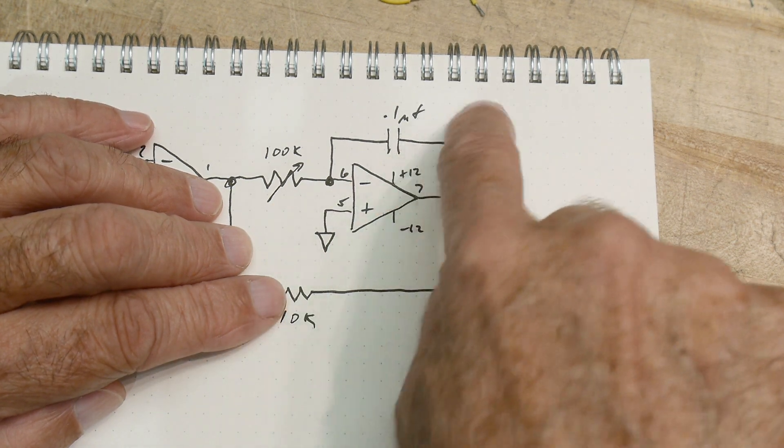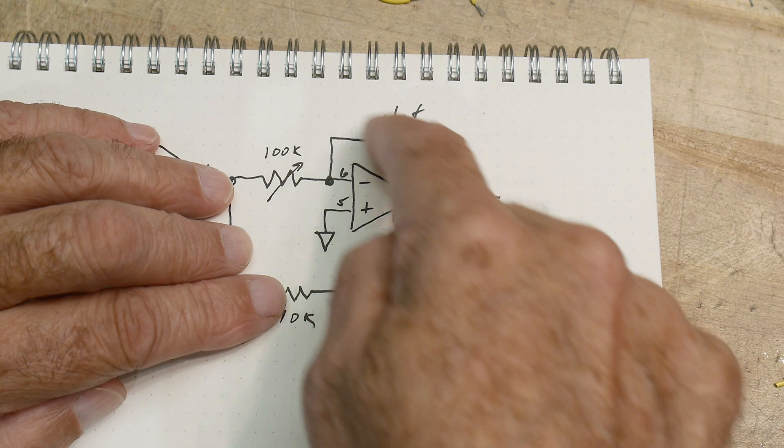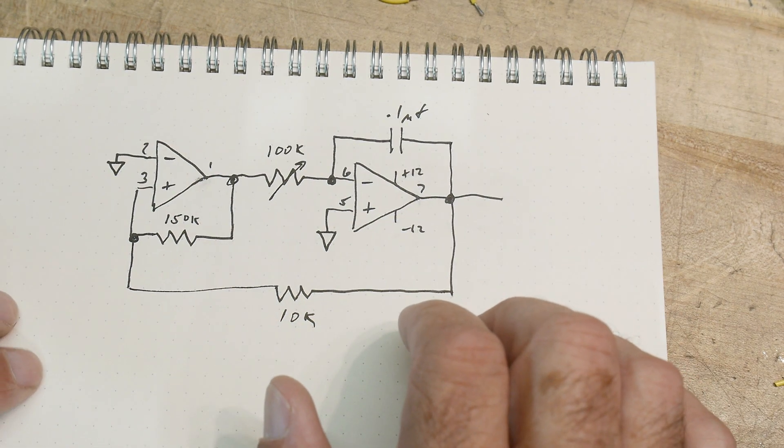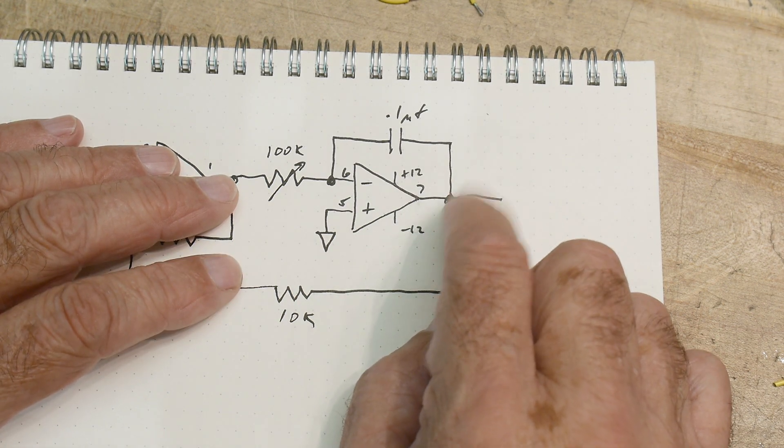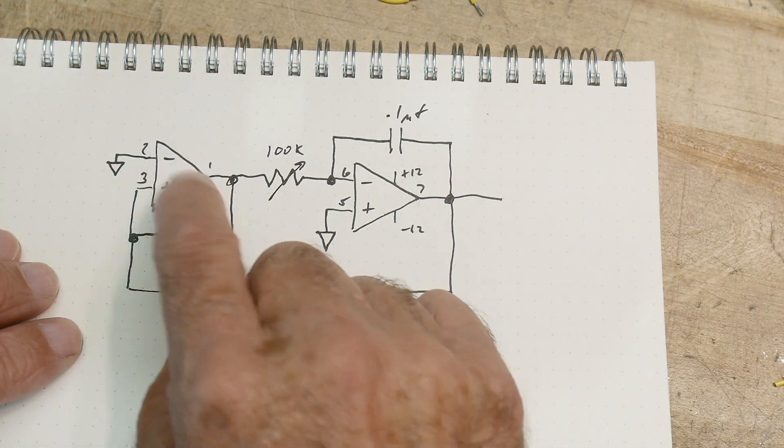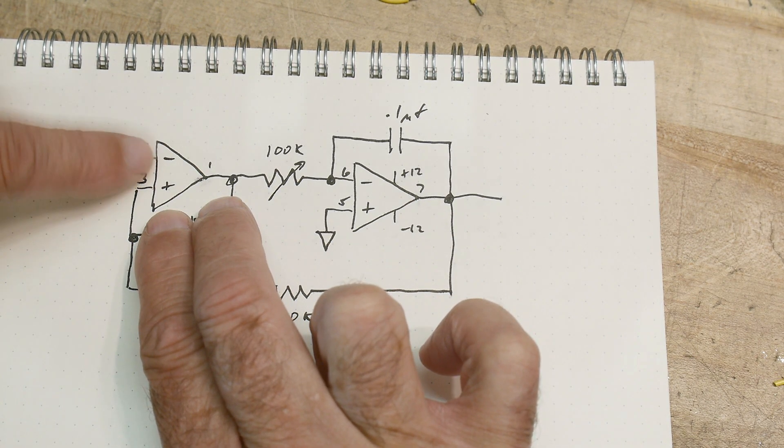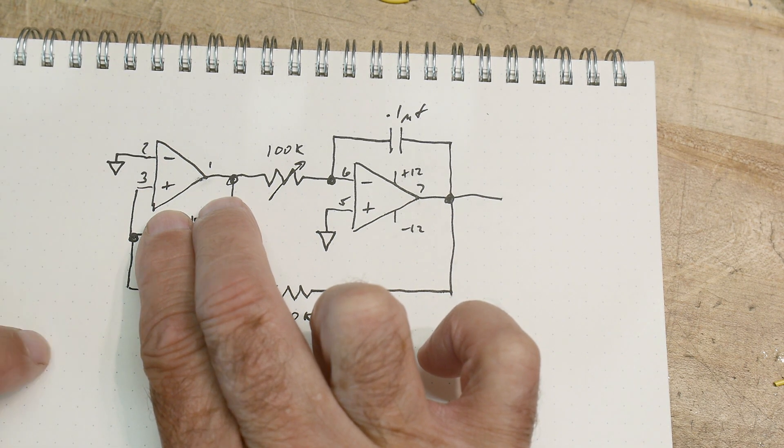It'll ramp up. If you put a negative voltage here, it'll ramp down. So we're going to take that ramp up and ramp down thing and we're going to feed it around into this circuit here. Basically, we're just going to be using this one as a comparator.